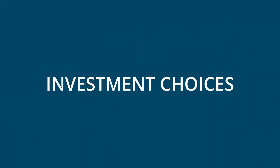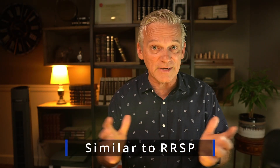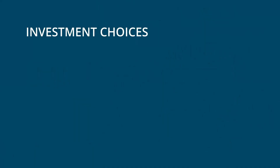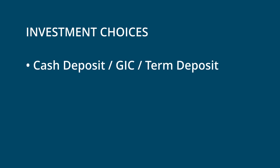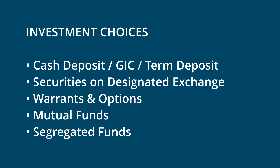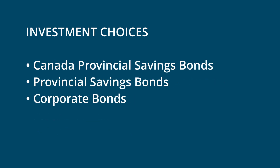Once you have cash in your TFSA, what can you do with it? The investments available inside a TFSA are very similar to what you can have in an RRSP. Examples include: straight cash, GICs, term deposits, most securities — stocks listed on a designated exchange — warrants and options such as puts and calls, mutual funds, segregated funds, Canada savings bonds, provincial savings bonds, and corporate bonds. You can also put insured mortgages into a tax-free savings account.